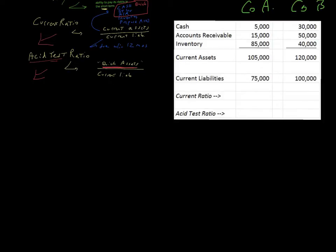Let's first compute the current ratio. Current ratio, as we can see on the top left, is computed by taking current assets divided by current liabilities. If we do that, we take 105 divided by 75 and we get a current ratio of 1.40 for company A. If we take current assets for company B of 120,000 divided by 100,000, we get a current ratio at that point in time of 1.20 for company B. So who has the higher current ratio? Well, company A does.